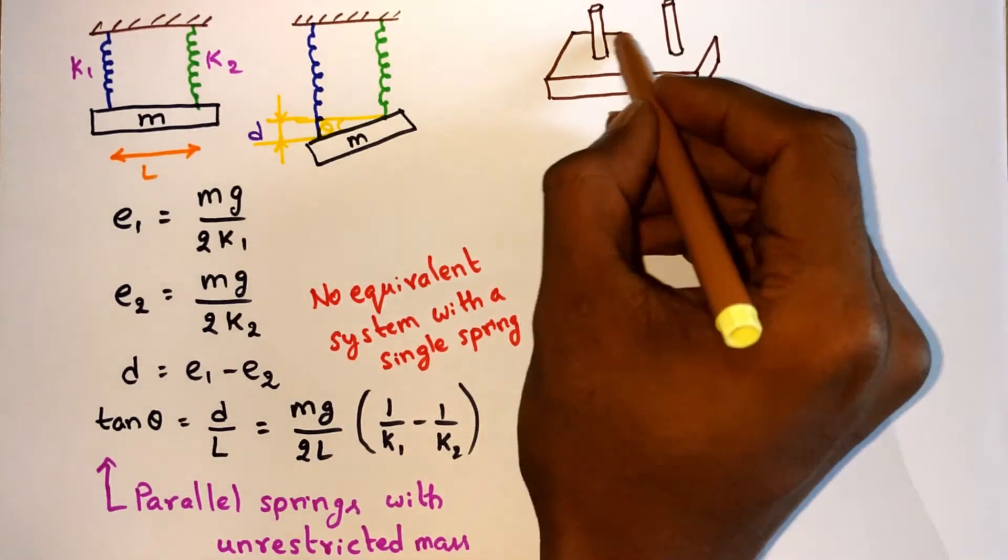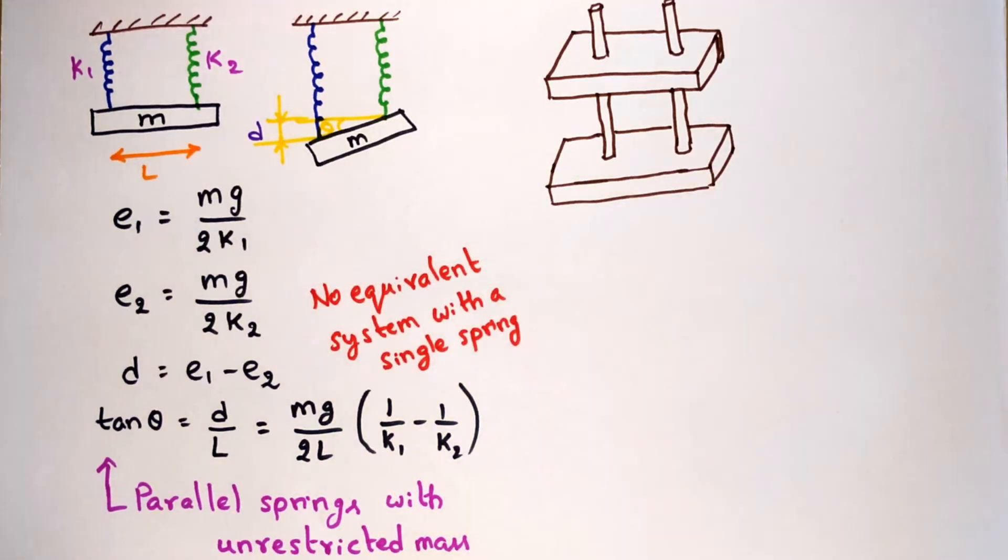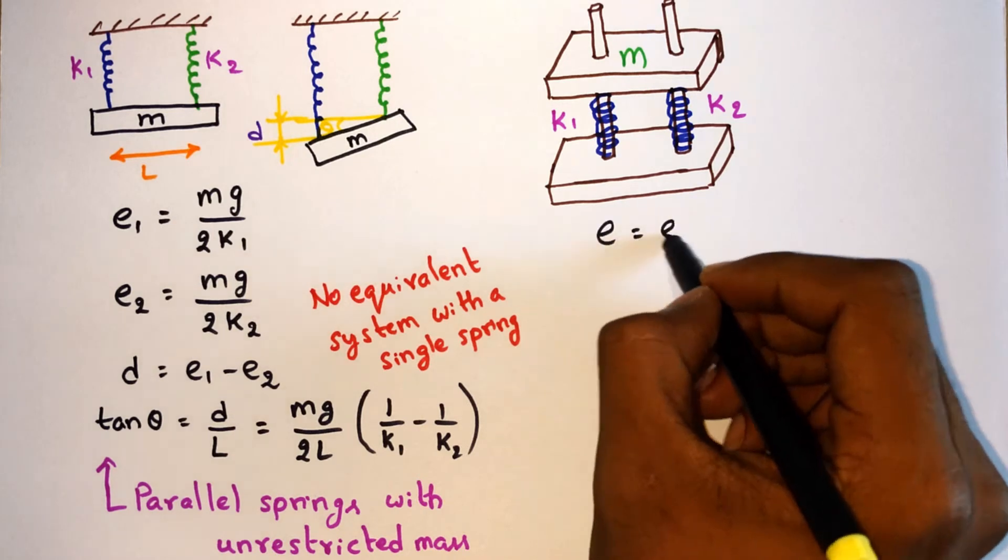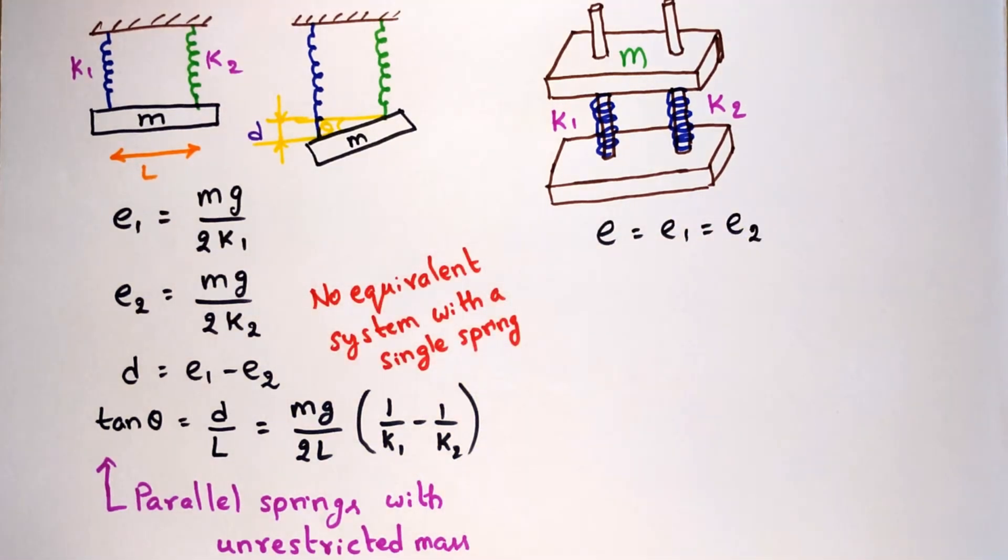But consider a case where the mass is restricted from tilting by means of supports. Even though the springs have different spring constants, they are forced to undergo the same amount of compression. Here in this case, the force acting on the springs will not be equal.